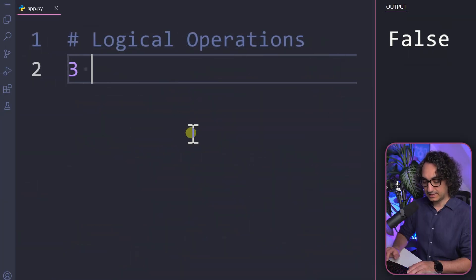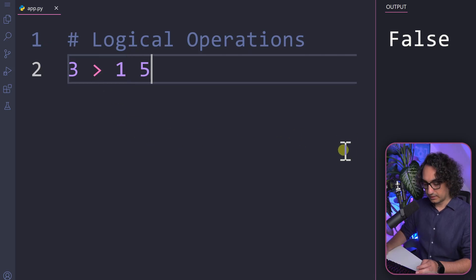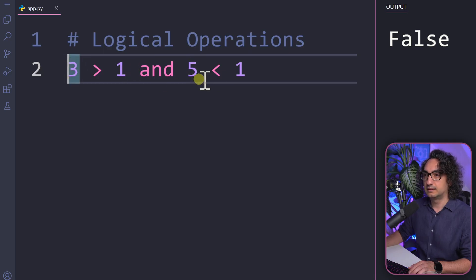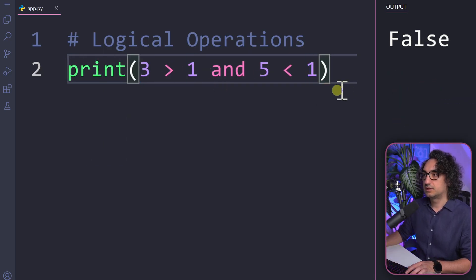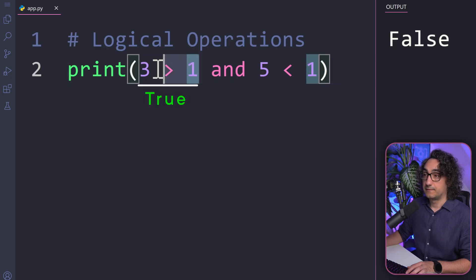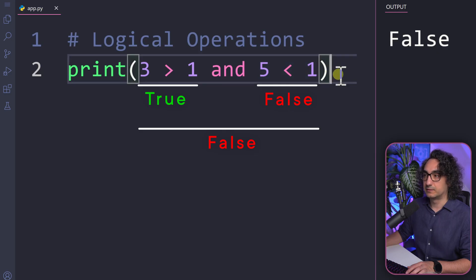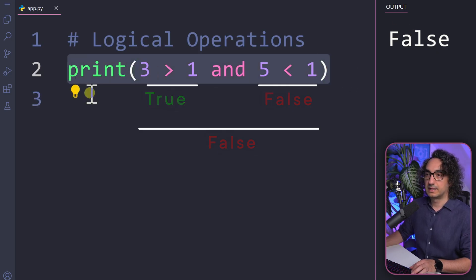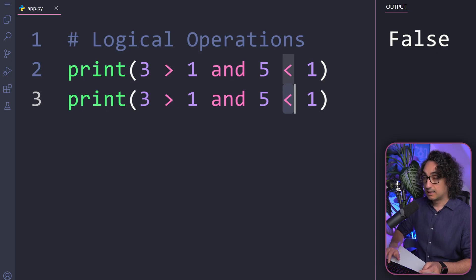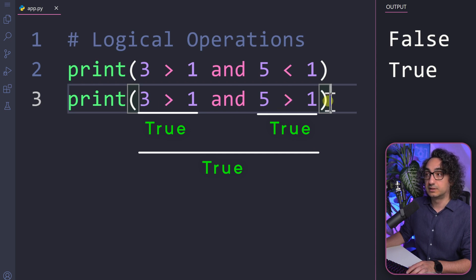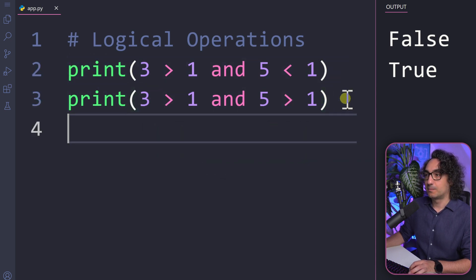Let's practice. We check whether three is higher than one, and five is less than one. Connecting them with 'and' and printing the result gives us false, because the first part is true but the second is not. But if we correct the condition to five greater than one and execute, we get true — because both expressions return true.